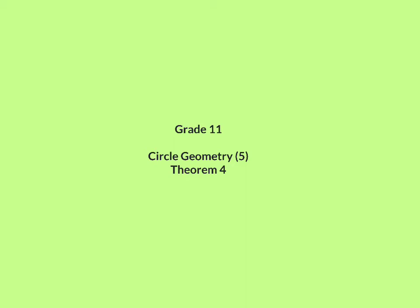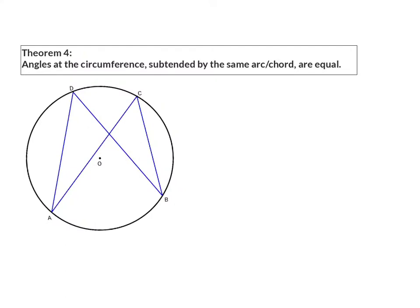In this lesson on circle geometry, we are going to have a look at Theorem 4. Angles at the circumference, in this case that will be B and C, subtended by the same arc, in our case A, B, or even a chord between A and B, are equal.